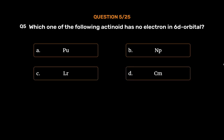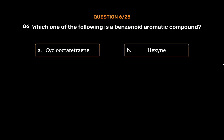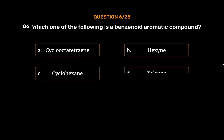The correct answer is Option A. Question number 6. Which one of the following is a benzenoid aromatic compound? Option A, cyclooctatetraene; Option B, hexyne; Option C, cyclohexane; Option D, toluene. The correct answer is Option D, toluene.